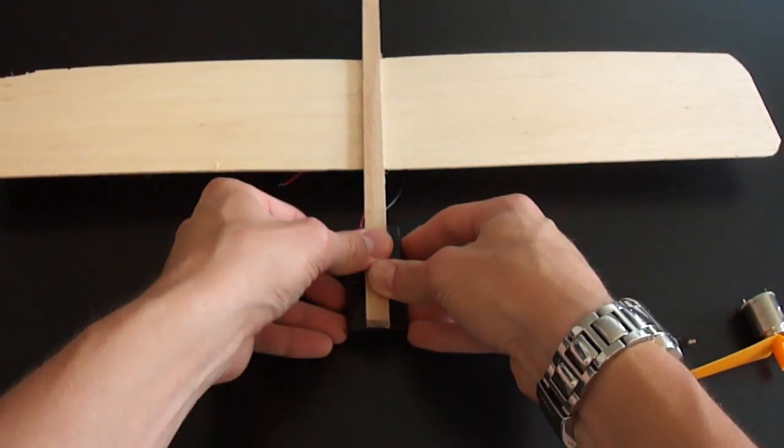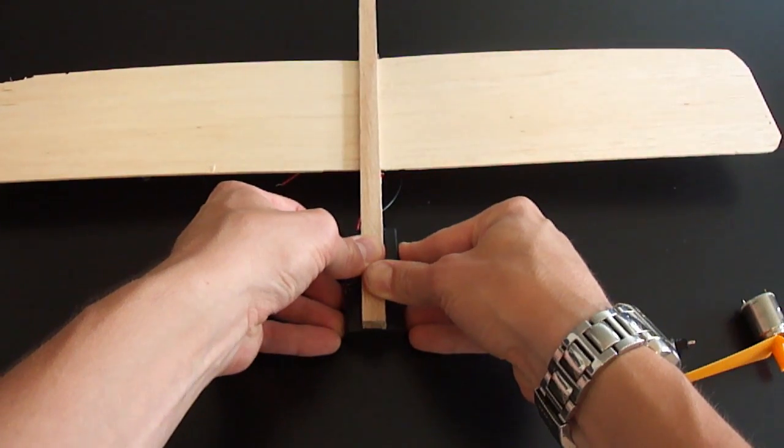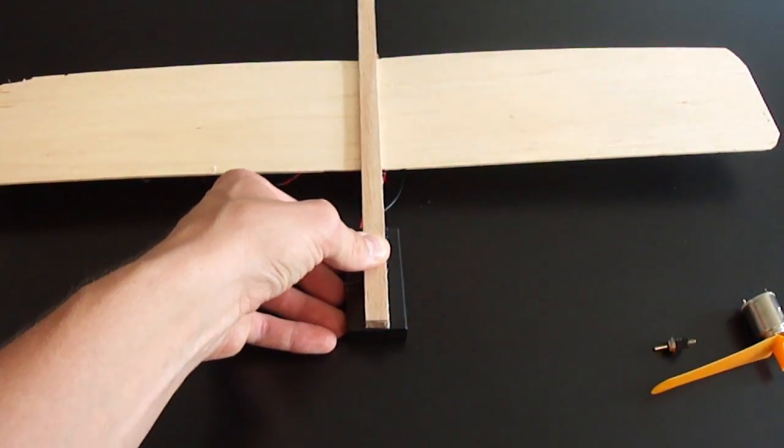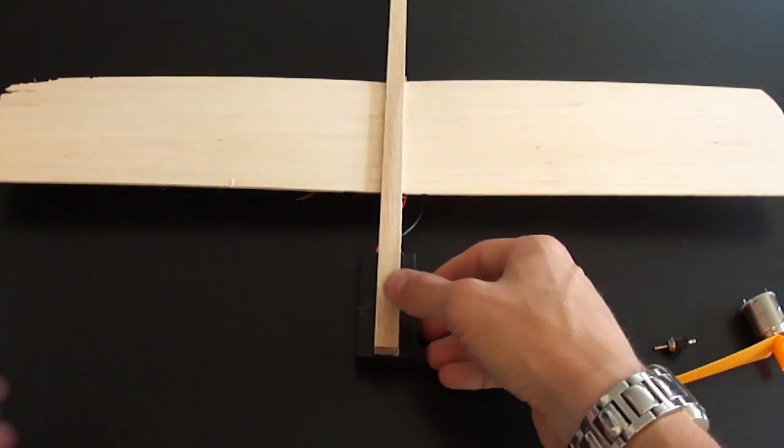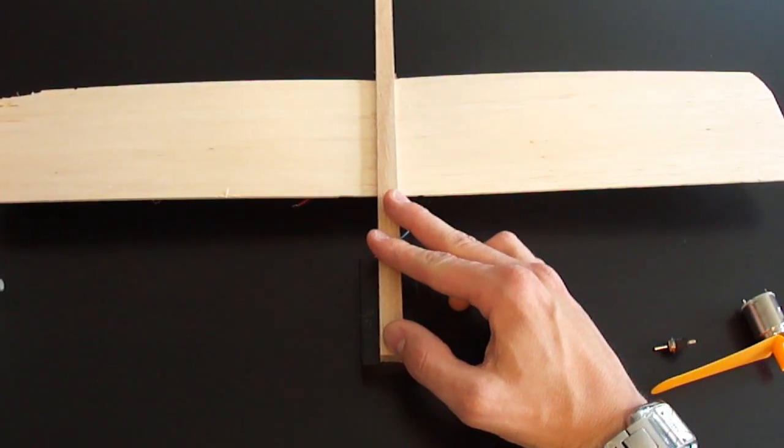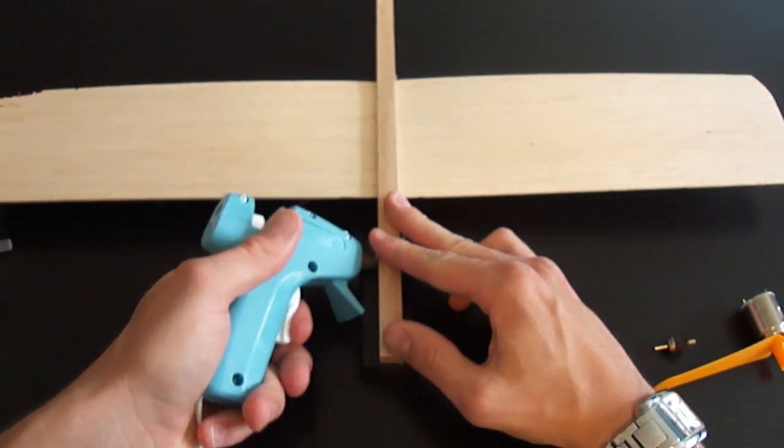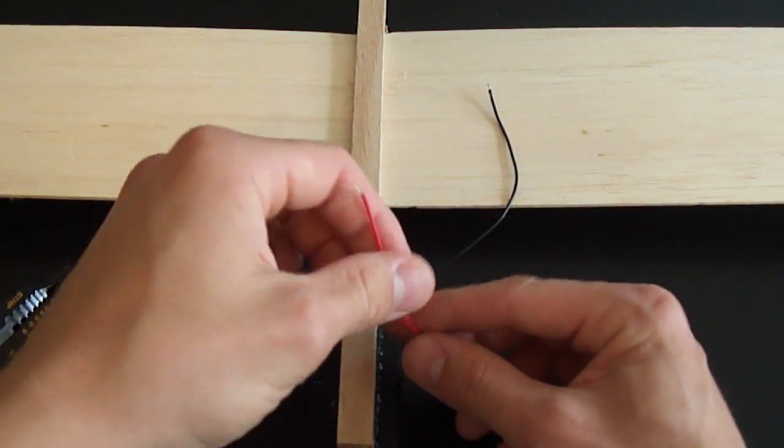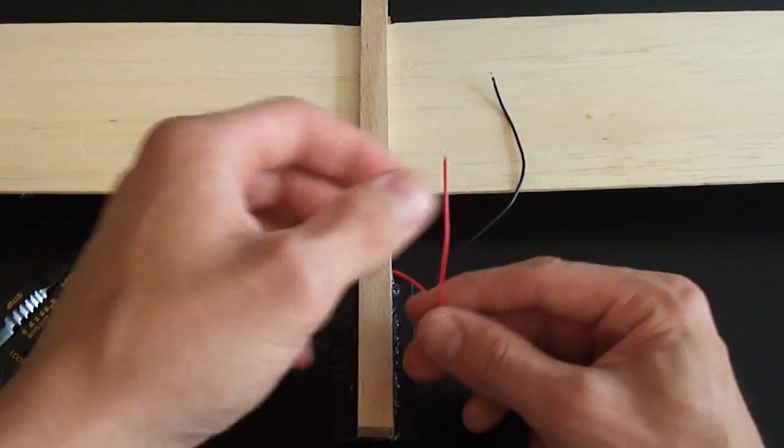You want to put this right at the edge of the plane, because this will be the weight now at the end of the balsa wood plane. I'm just going to hold that down until it solidifies and I'm going to put a bead going down the edge here. The battery pack is on. It's solidified. It's on there pretty good.